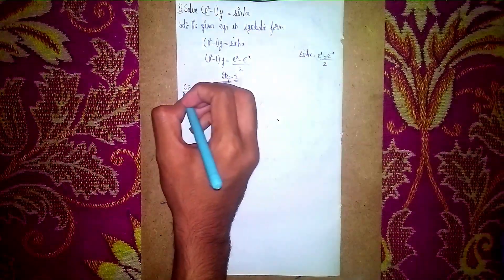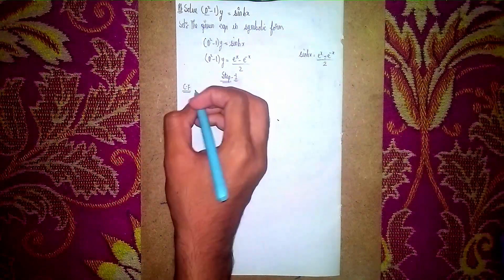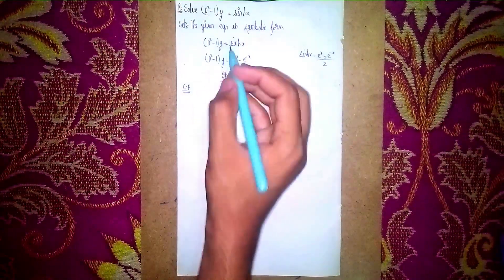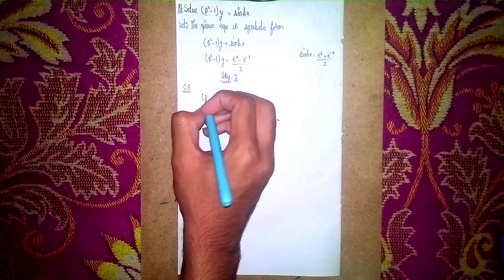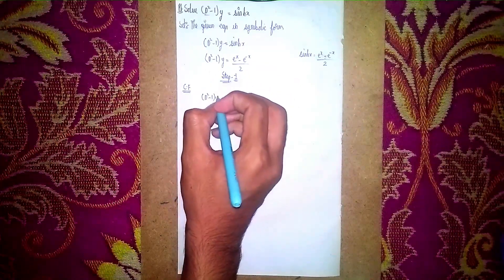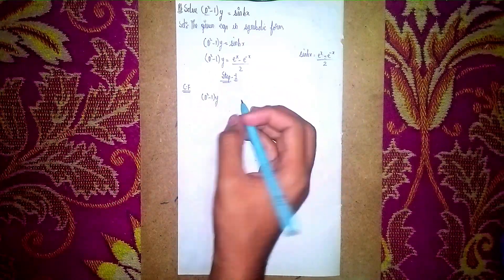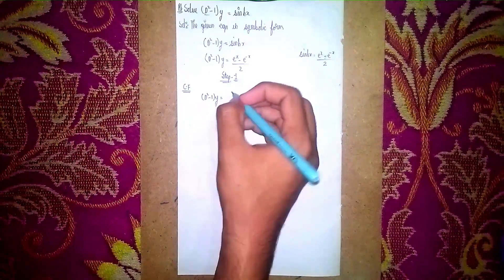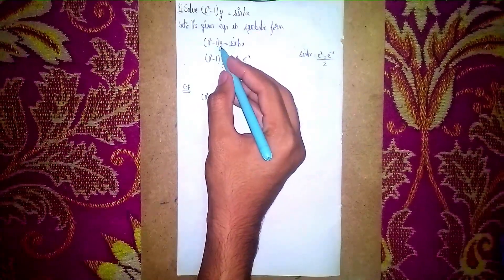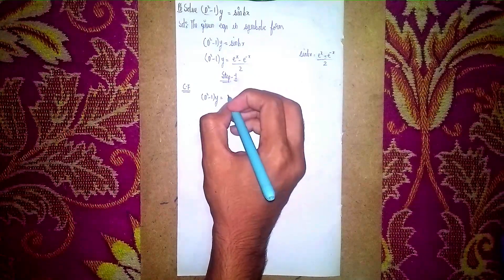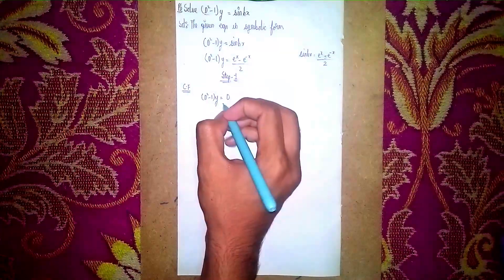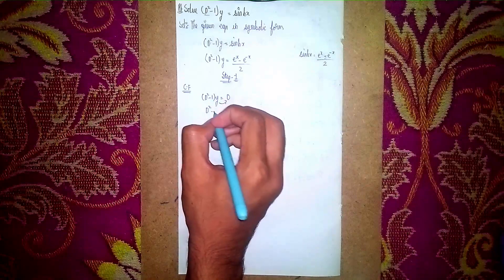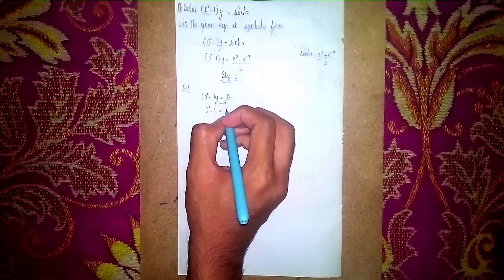For the complementary function, we take the left-hand side and set (D² - 1) y equal to 0. We then set D squared minus 1 equal to 0 to find the auxiliary equation.